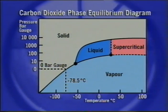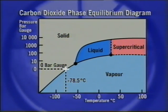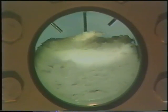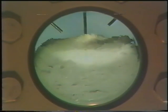Pressure continues to fall and below the triple point, only solid and vapor are present in the cell. Solid CO2 is commonly known as dry ice. It has a surface temperature of minus 78.5 degrees centigrade at atmospheric pressure. The pressure inside the cell is now equal to that of the surrounding atmosphere, which is approximately zero bar gauge, equivalent to about one bar absolute. The vent valve is closed.